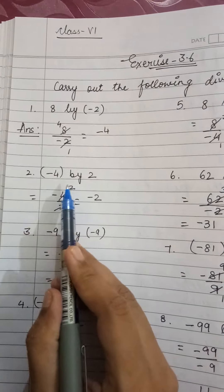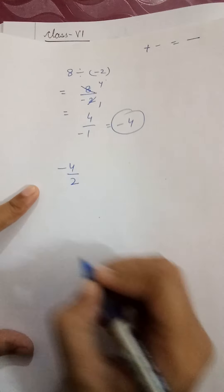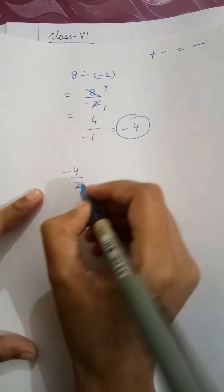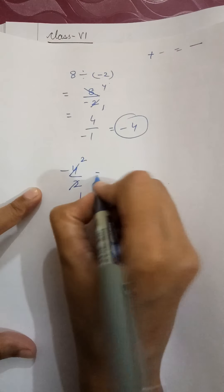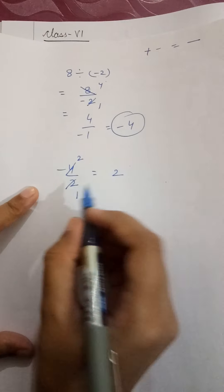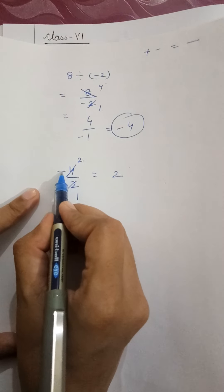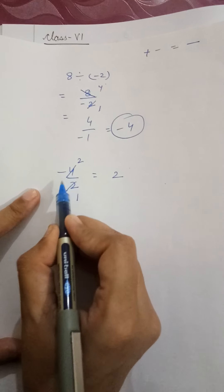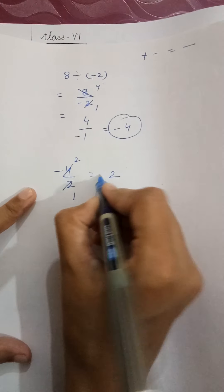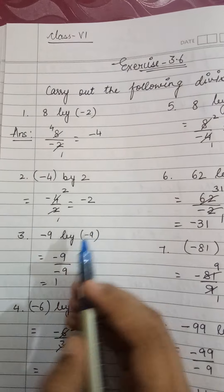Similarly, the next part: minus 4 you have to divide by 2. The answer is 2, but with which sign? Here minus sign is there and here no sign is there, and what is plus minus? Minus. So the answer is minus 2.